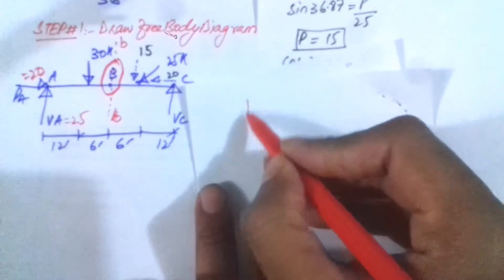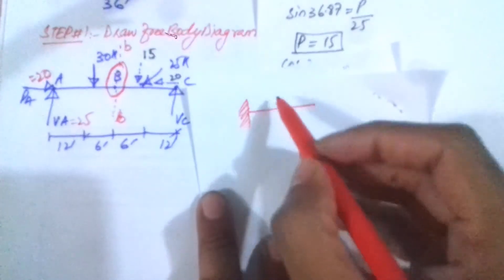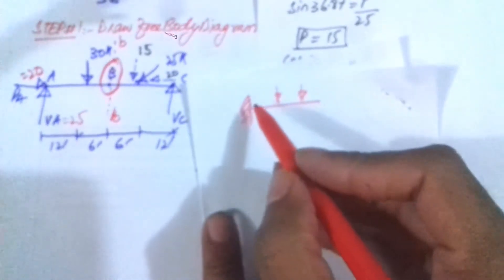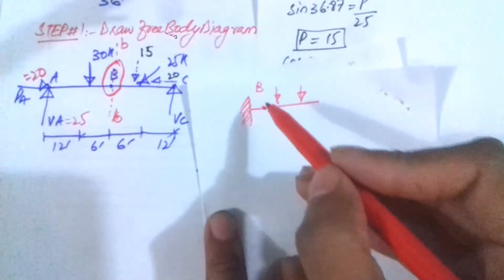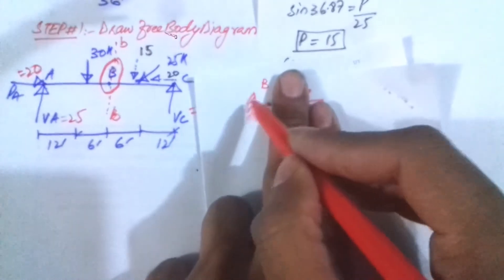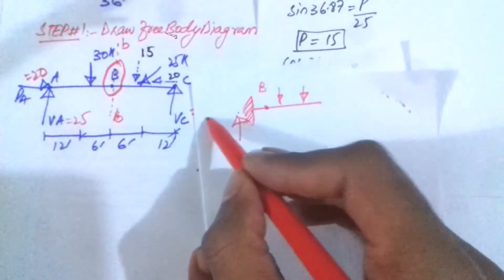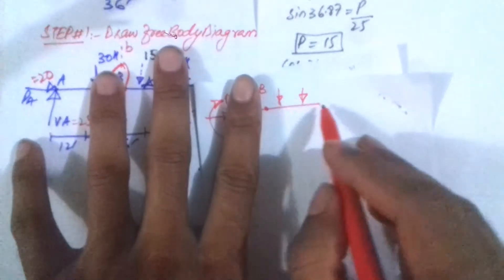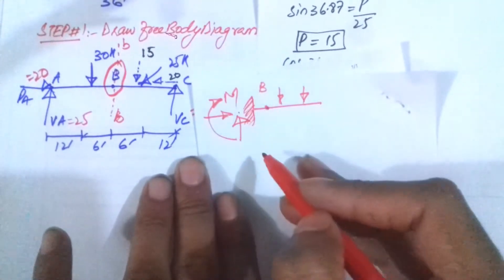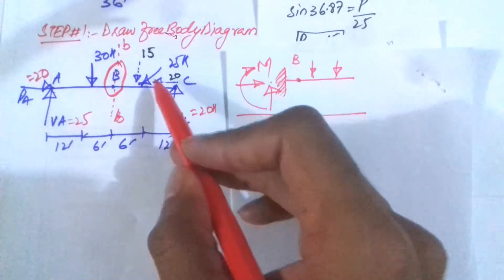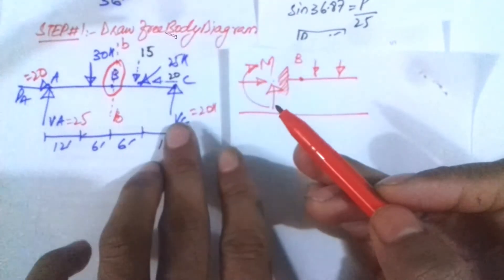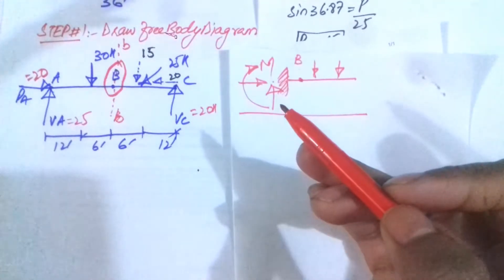For example, in a fixed-free beam with forces on each side, using the right portion near the free end avoids having to calculate fixed support reactions including vertical, horizontal, and bending moment reactions. But if you use the right portion, you don't need those support reactions. Here, since there are only two forces on the left side, I am using the left side portion.